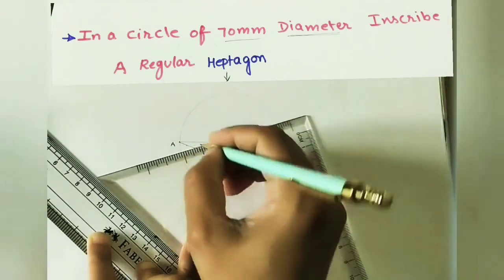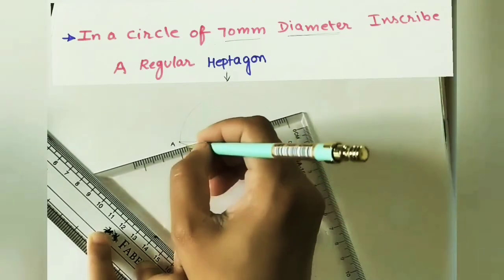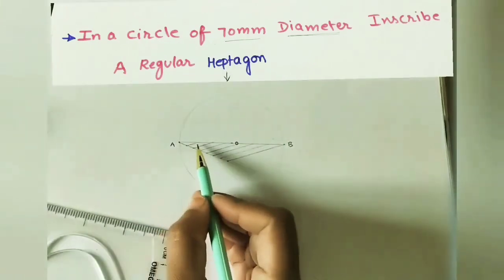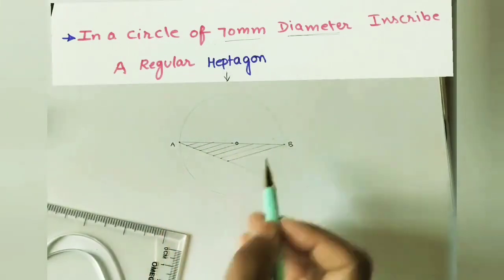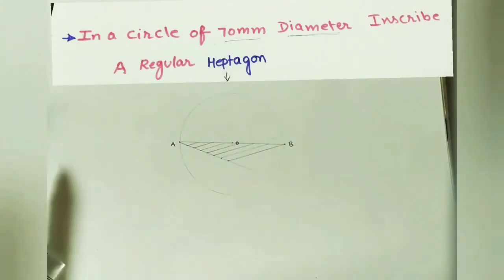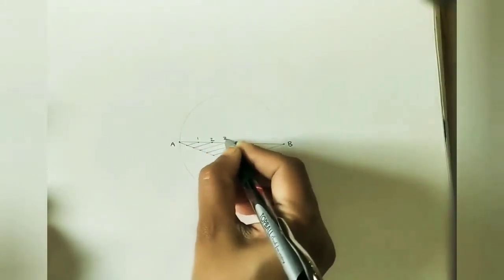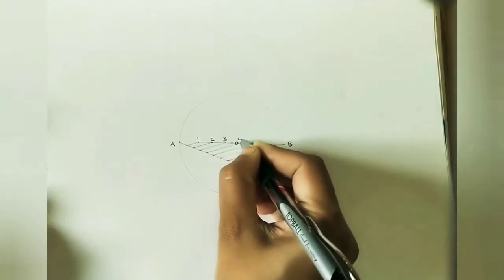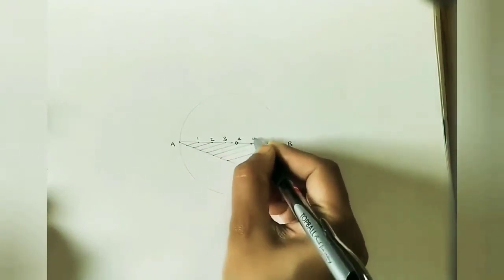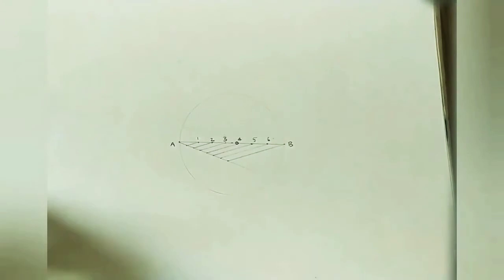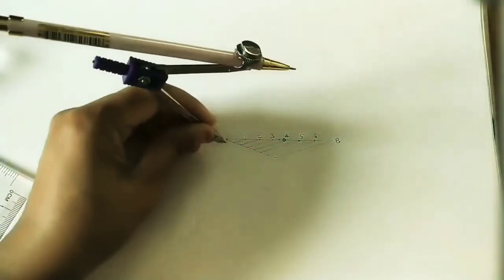So we have made seven equal divisions. Mark the intersection points one, two, three, four, five, six. So it has seven divisions.